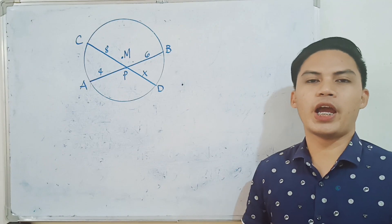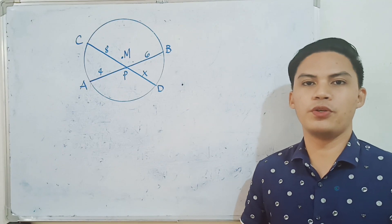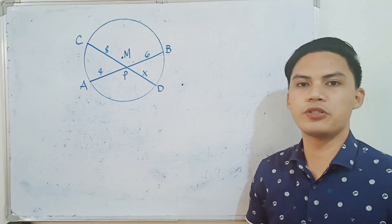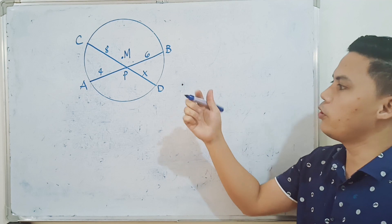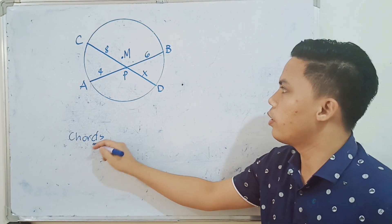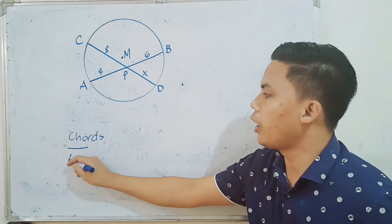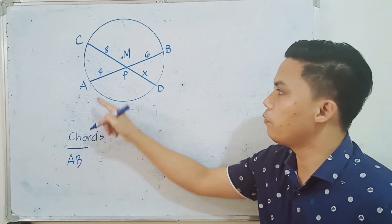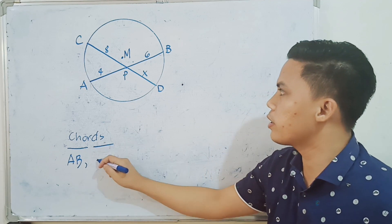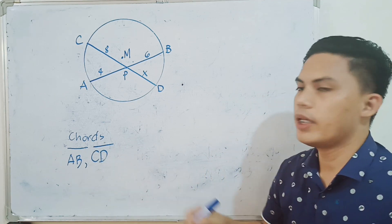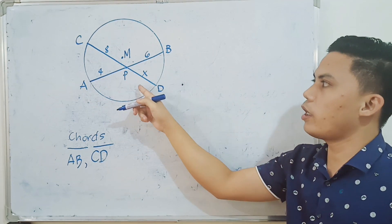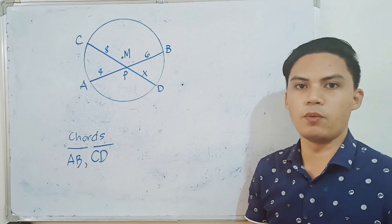So I have here an example of our first theorem. The first theorem involves two intersecting chords. So where are the chords? We have chord AB as our first chord, and our second chord is segment CD. The theorem states that the product of each chord's segments are equal.